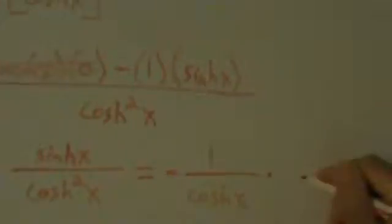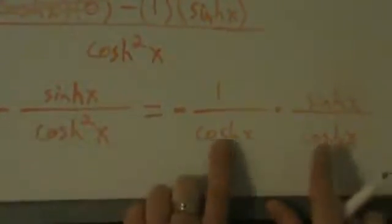Let's go ahead and continue with this now. Cosh squared of x, that's just cosh x times cosh x. So let's go ahead and rewrite this: negative 1 over cosh of x times sinh x over cosh x. These are the same thing here. On the bottom is cosh squared; cosh times cosh gives us cosh squared. And on the top is just 1 times sinh, which is the same thing as sinh.